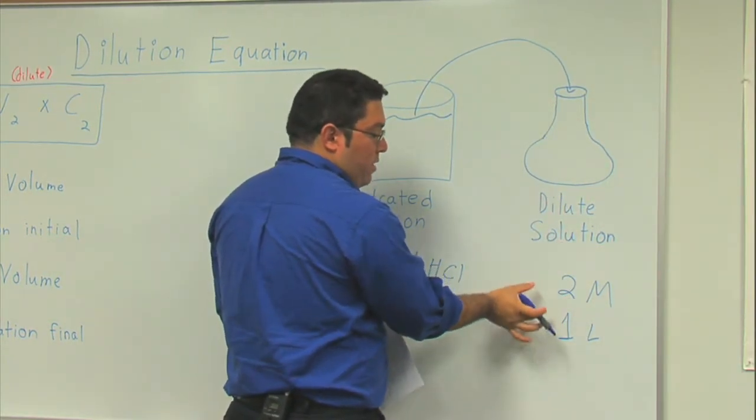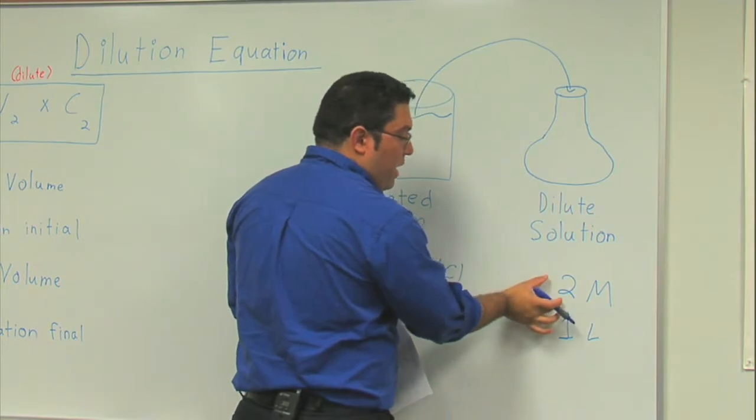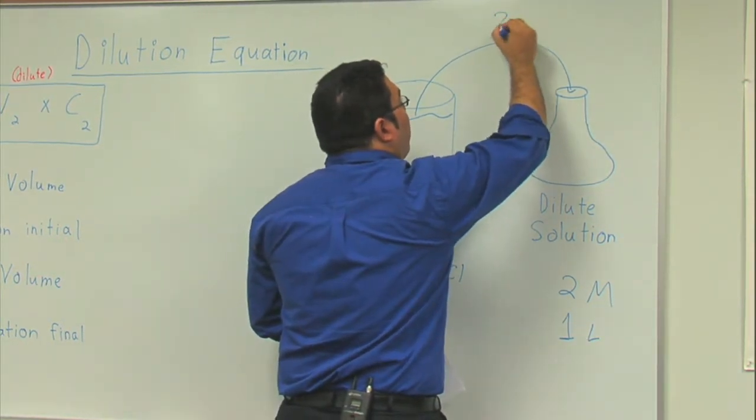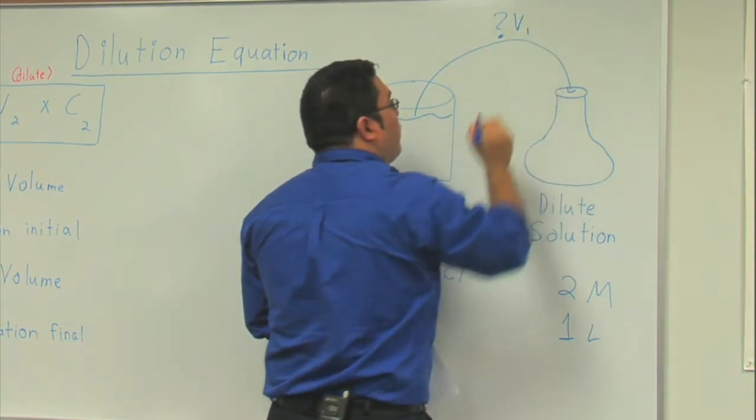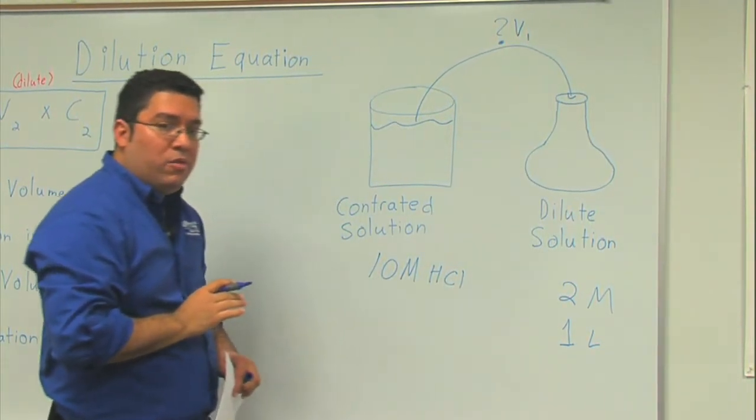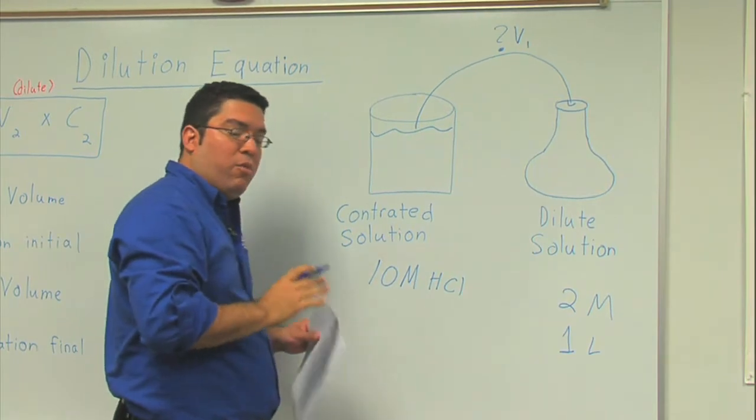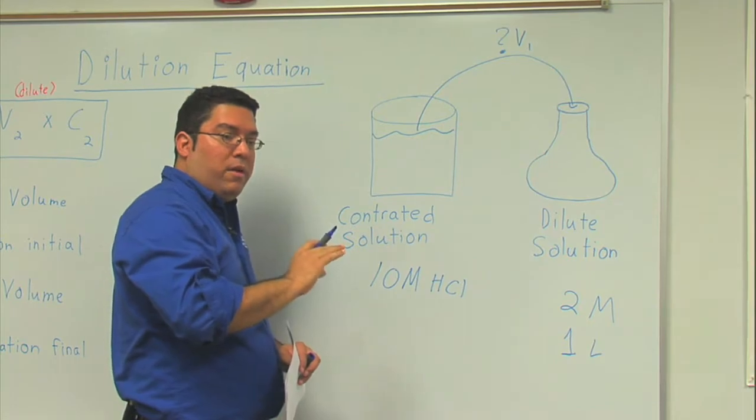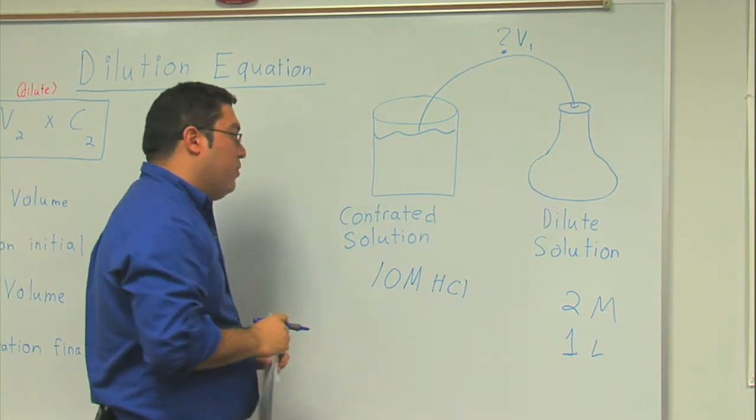What they're really asking us for is for the volume initial, and this is quite common. You'll see that they're going to always ask for one of the variables from the dilution equation. Your task is to write the variable, the equation, and then plug in for those variables.